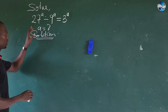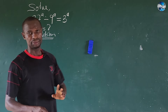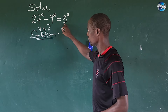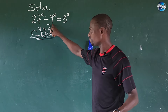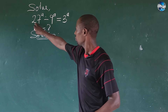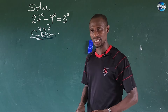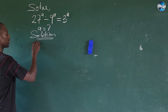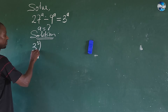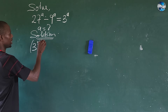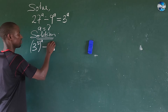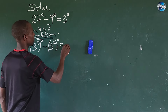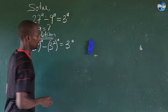Looking at this question, the base number on the right-hand side is 3, so we can express everything in base 3. If we do that, this gives us (3^3)^a minus (3^2)^a equals 3^a.